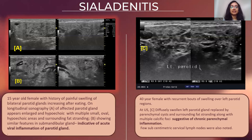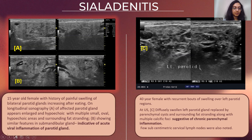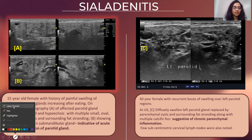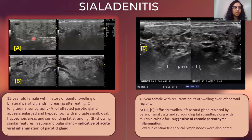The first case is a 15-year-old female with history of painful swelling of bilateral parotid gland which increased after eating. On longitudinal study of the parotid gland, it appears enlarged and there were few hypoechoic linear striations inside and generalized fat surrounding the parotid gland as well as the submandibular gland. This was indicative of a viral inflammation of the parotid.